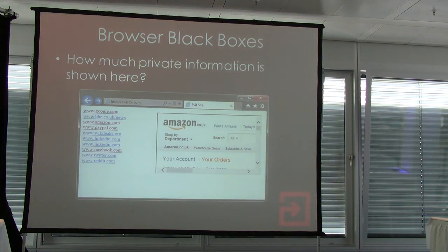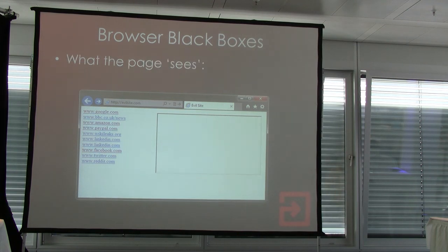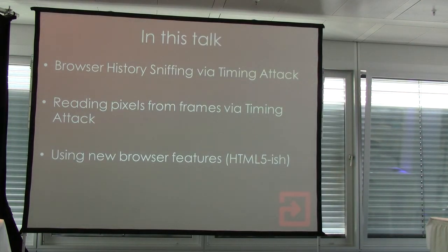Here's an example. On the left we've got a bunch of links on a web page — some visited, some not. On the right I've loaded my Amazon account page inside an iframe. But the browser can't really see that. It doesn't know if you've visited the links and it can't see anything inside the iframe. So what I'm going to do is show how we can do browser history sniffing with a timing attack, and how you can read pixels from the iframe with a timing attack, using new browser features that are nothing to do with HTML5.